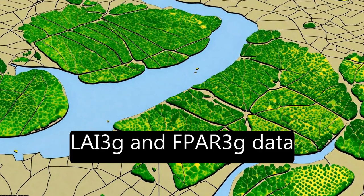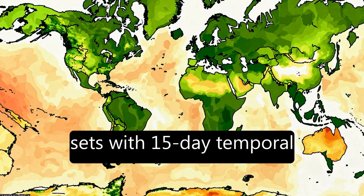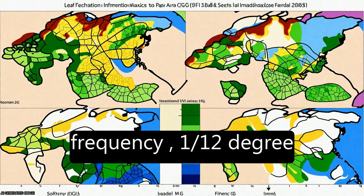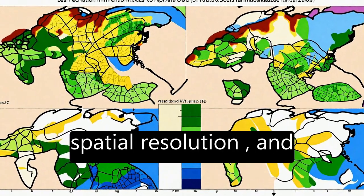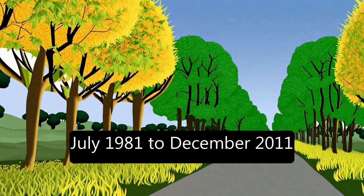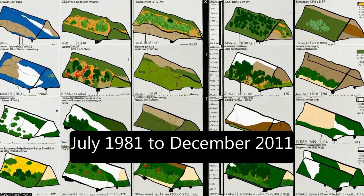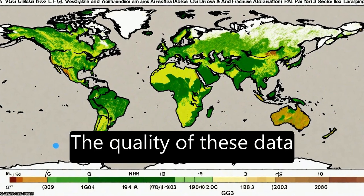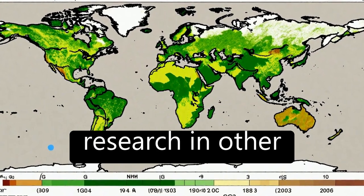The LAI-3G and FPAR-3G data sets feature 15-day temporal frequency, 1/12-degree spatial resolution, and a temporal span of July 1981 to December 2011.